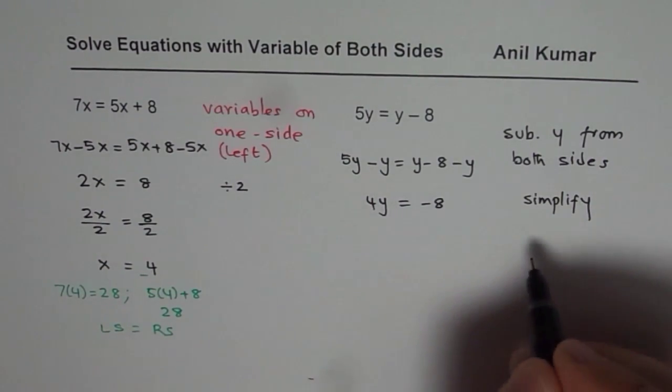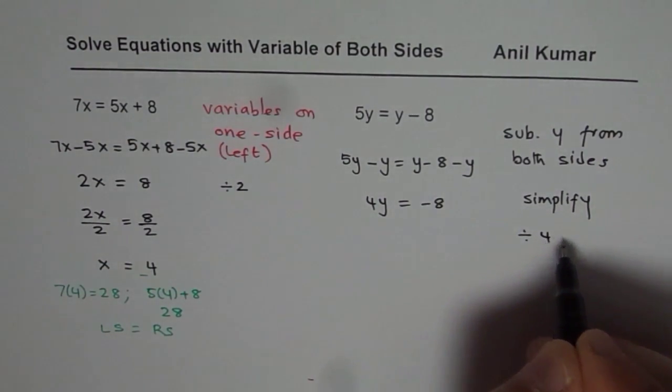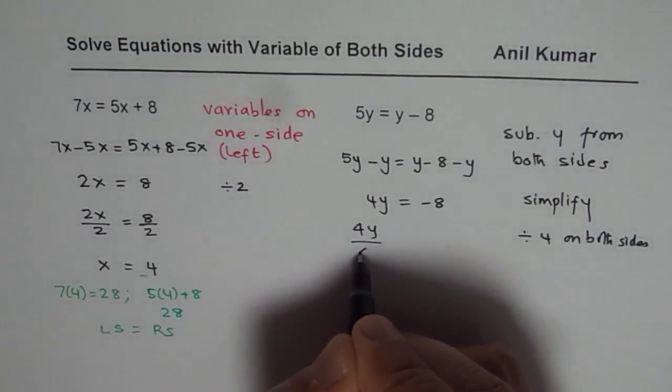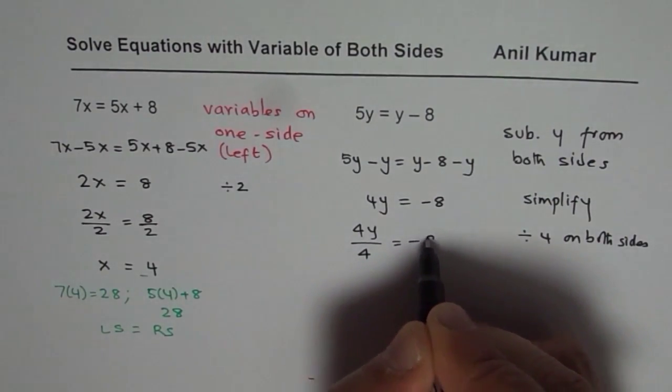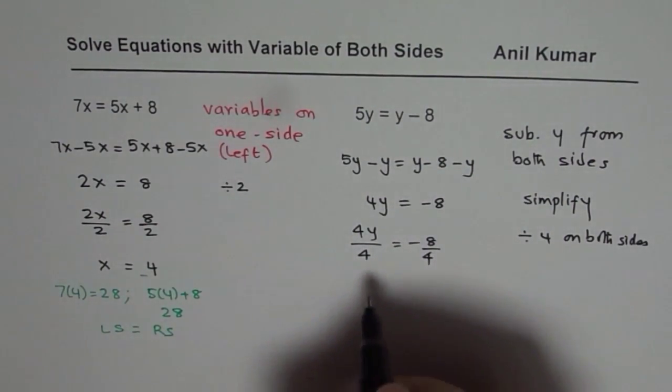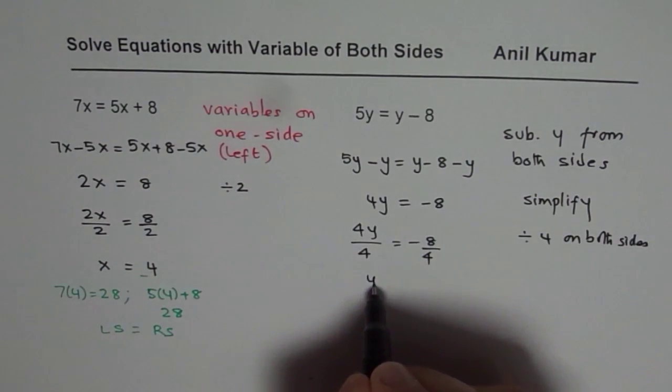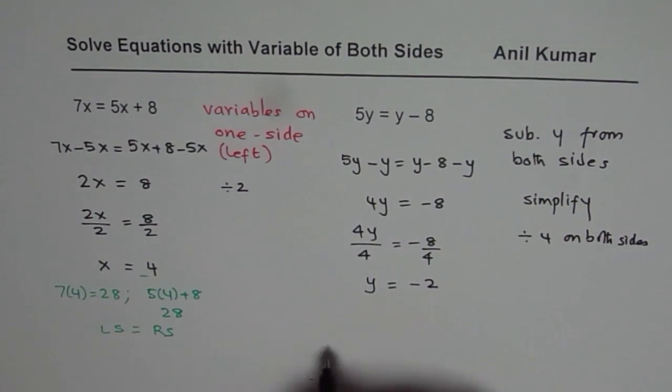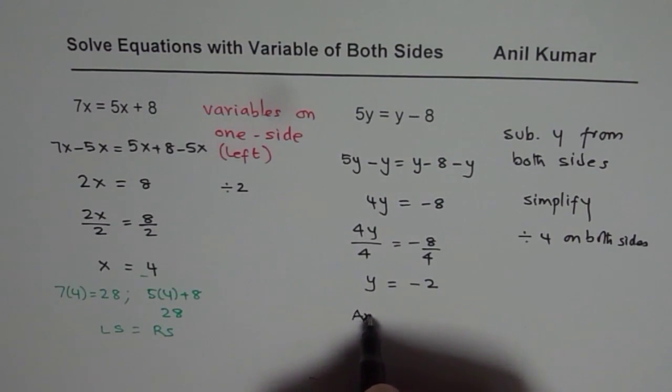Now to solve, what should you do? You should divide by 4 on both sides. So 4y divided by 4 equals minus 8 divided by 4. 4 divided by 4 is 1, so you are left with y. Minus 8 divided by 4 is minus 2. Therefore our answer is y equals minus 2.